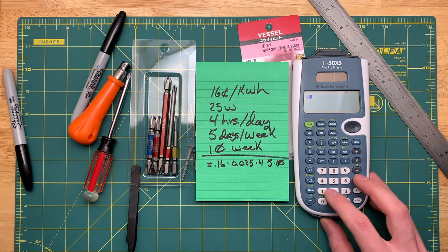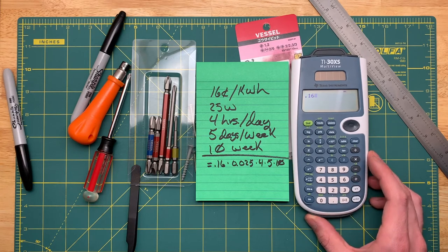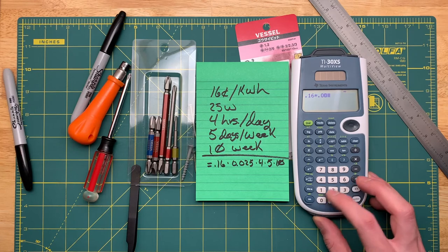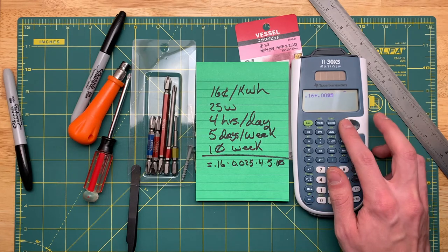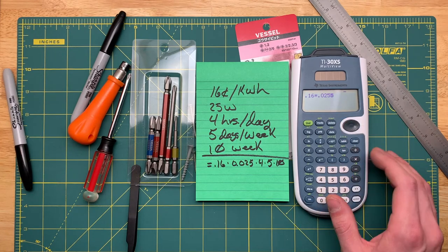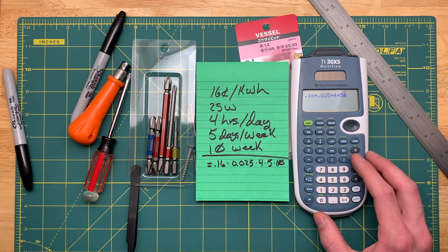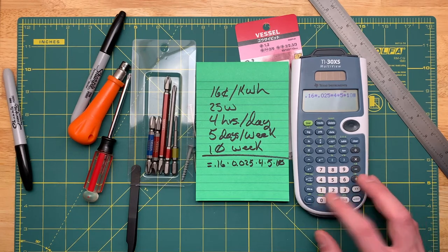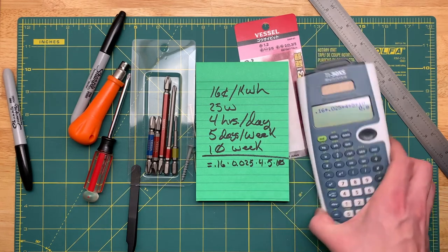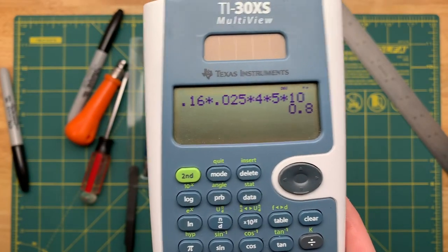So what are we doing here? 0.16 dollars times 0.025, times four hours times five days times 10 weeks, and we get 0.8 dollars.